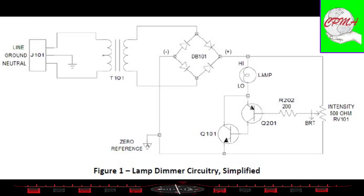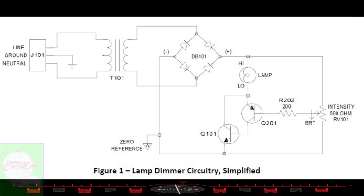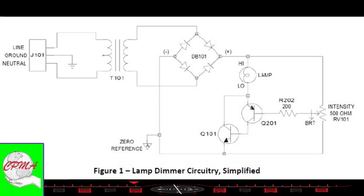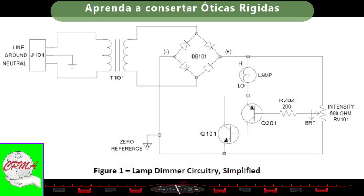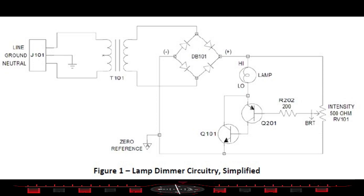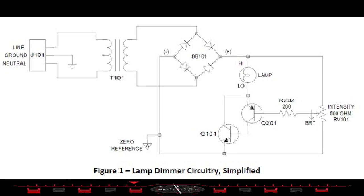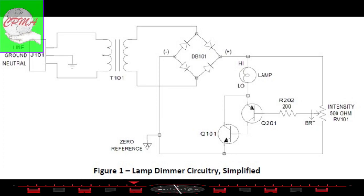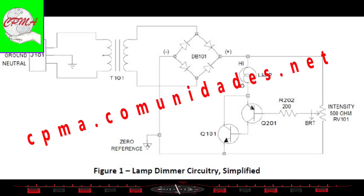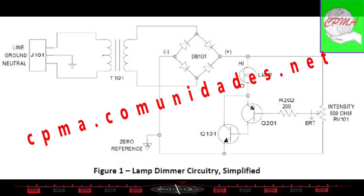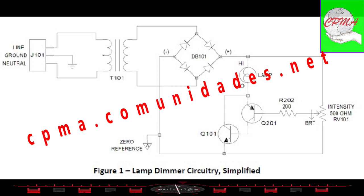Circuito dímer da lâmpada, conforme a figura 1. É um diagrama esquemático simplificado do circuito dímer da lâmpada. Este diagrama contém detalhes necessários para uma compreensão da operação básica do dímer. Detalhes como mutação, fusão, interconexões elétricas e limitação da corrente foram omitidos para maior clareza. Consulte este documento para obter um diagrama esquemático completo e detalhado eletrônico BBHA BHTU.